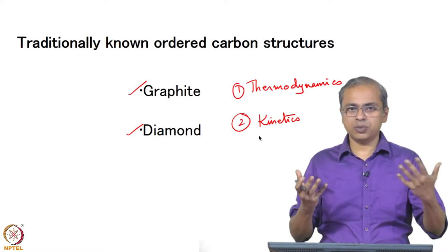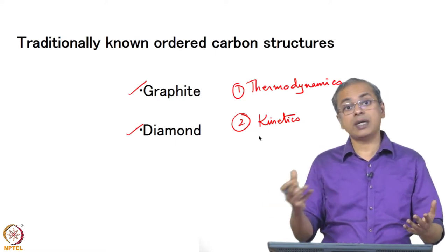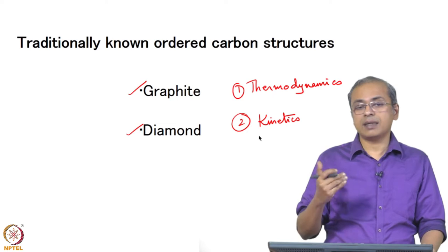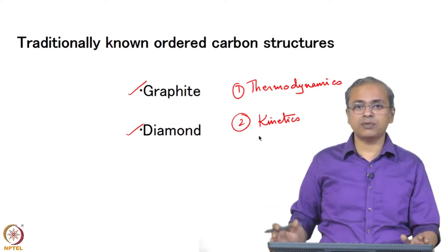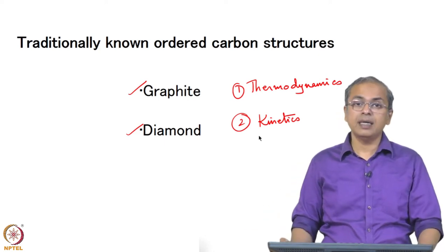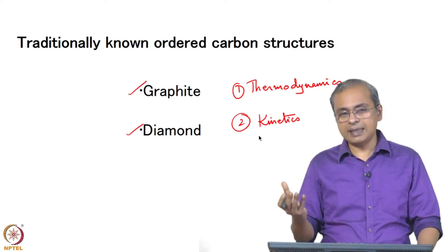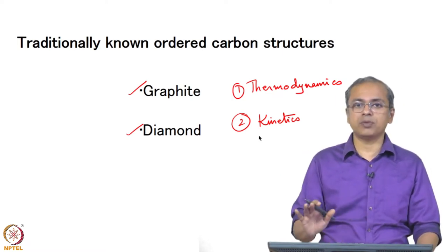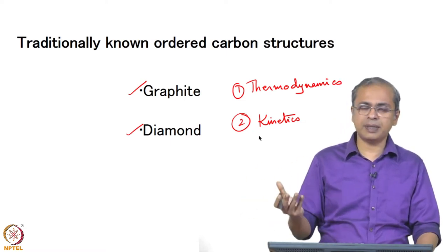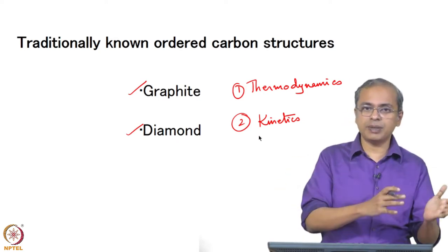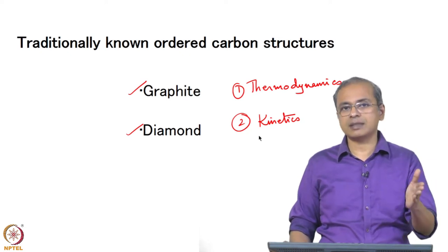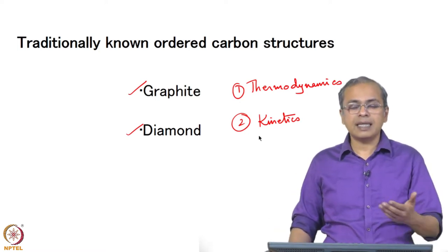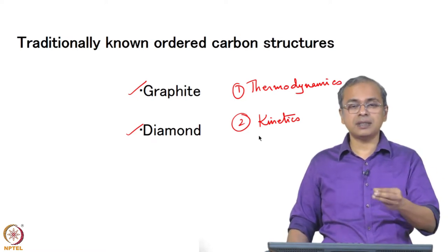In all of chemistry you are dealing with thermodynamics, which tells us what will happen, and kinetics, which tells us at what rate that will happen. Many times you will see a phase that is stable at room temperature and used industrially, even though it is not thermodynamically the most stable phase. For it to transform to the most stable phase would take thousands of years at room temperature and atmospheric pressure. But under very high temperature or high pressure, that transformation may occur very fast.